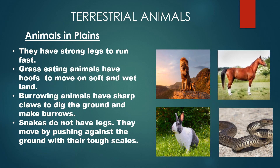Now in terrestrial animals, let's go step by step. First, animals in plains: most animals living on land surfaces like forests and grasslands have strong legs to run fast, like lions. These strong legs serve two purposes - they help animals catch their prey and help them run away from their enemies.